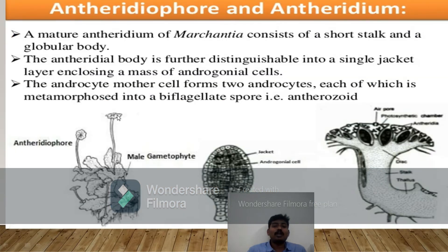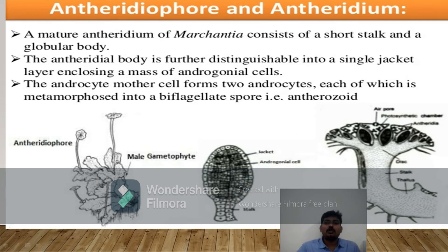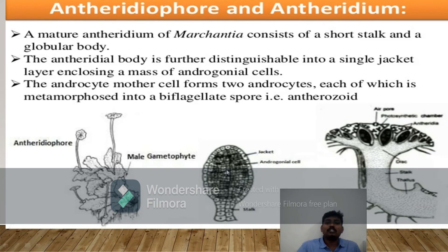The antheridiophore is an erect branch of the thallus distinguishable into a stalk and an eight-lobed disc structure. When we observe the antheridiophore, these are the antheridiophores — eight-lobed structures on the male gametophyte. The mature anthridium of Marchantia consists of a short stalk and a globular body. The anthridial body is distinguished into a single jacket layer enclosing a mass of androgonial cells. These androgonial cells are converted into androcyte mother cells and then androcytes, each of which metamorphoses into a biflagellate sperm called an antherozoid.